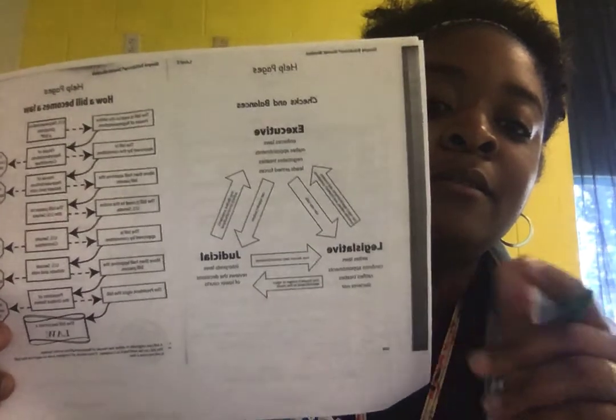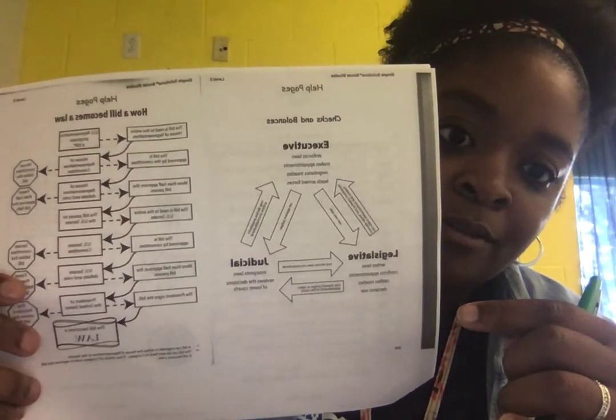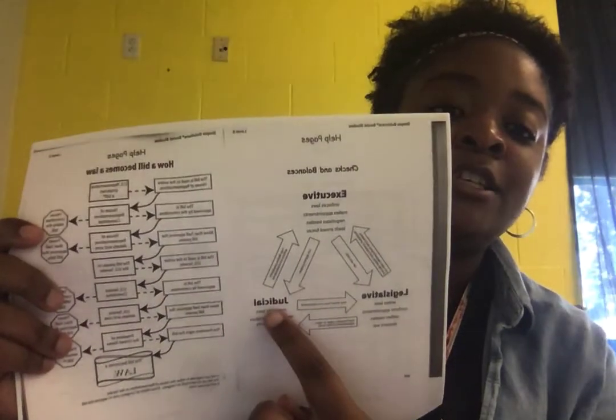Now let's go back to our help pages and figure out who is in charge of enforcing the laws. Look at your chart — you should be writing down the executive branch. The executive branch is made up of our president, and he is in charge of enforcing the laws. That leaves interpreting the laws — this group of people figures out if laws are constitutional or unconstitutional. The last branch is the judicial branch, which is our Supreme Court. Write judicial in the last box, and you are finished. I will see you guys for lesson two.